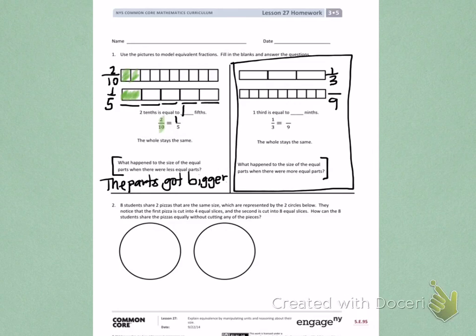How can the eight students share the pizzas equally without cutting any of the pieces? I'm going to start by partitioning one pizza into four equal slices, and then I'm going to partition the other pizza into eight equal slices.